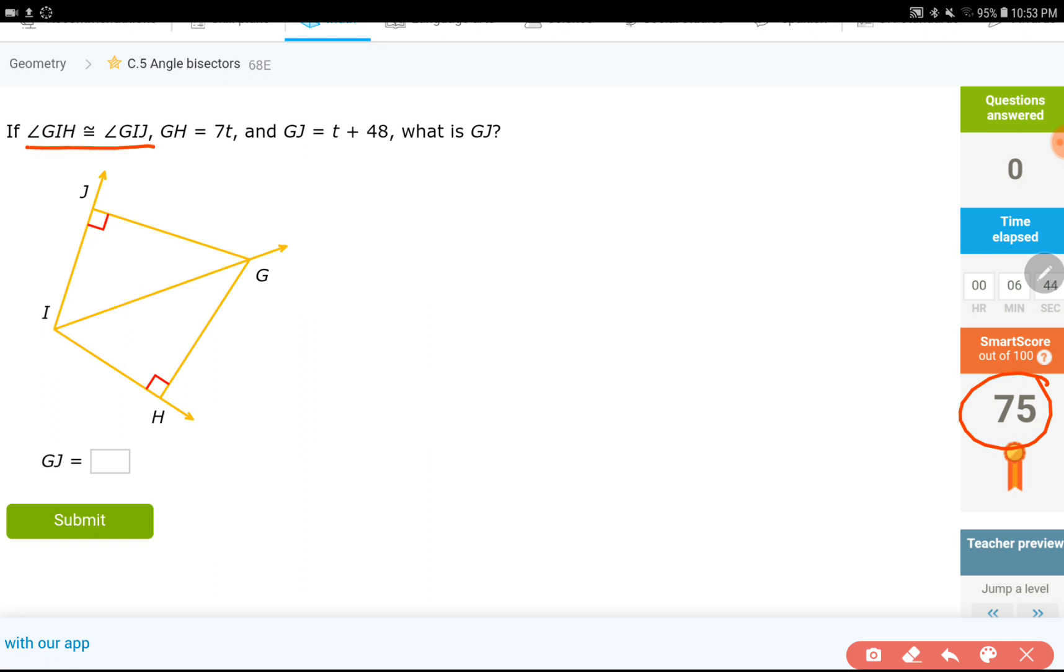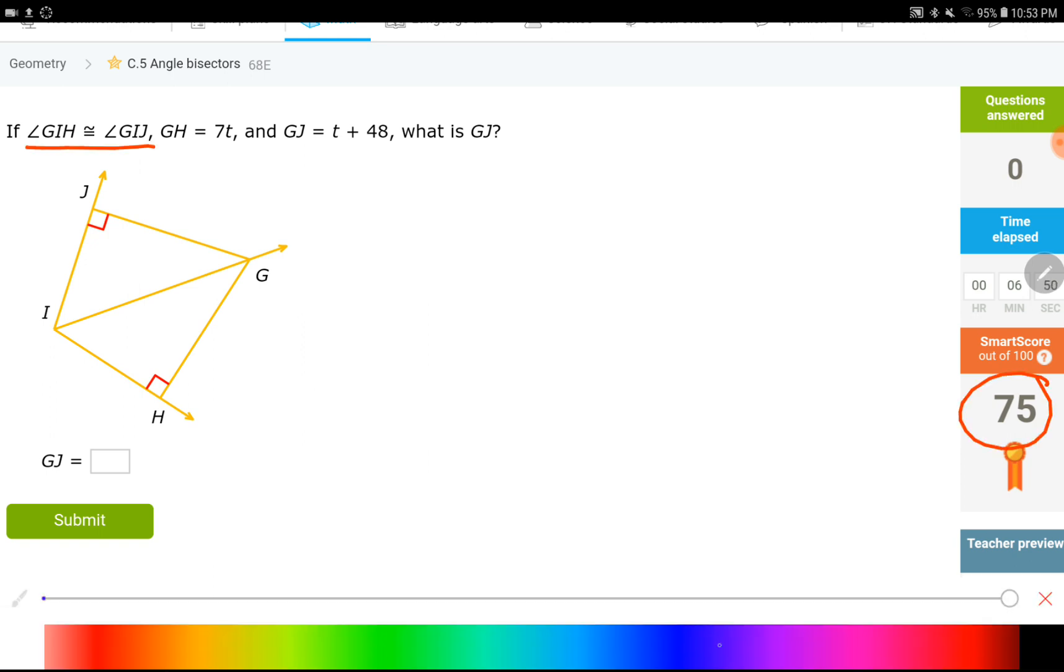Two angles being equal. G, I, H is right here. I'll use a different color. And G, I, J. These two angles are equal. Two sides. G, H, and G, J are given. G, H is right here. 70. G, J is T plus 48. Okay.